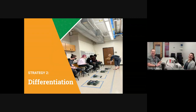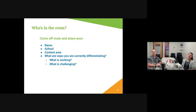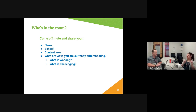We're going to do a whip-around. Share your name, the school you're currently teaching at, your content area and grade level if applicable, and what ways you're currently differentiating — what's working really well and what's more challenging. I'll give everybody about a minute of think time. Someone can volunteer to start, otherwise I'll pick someone randomly, and then we'll popcorn out — when you finish, choose someone else to take over.